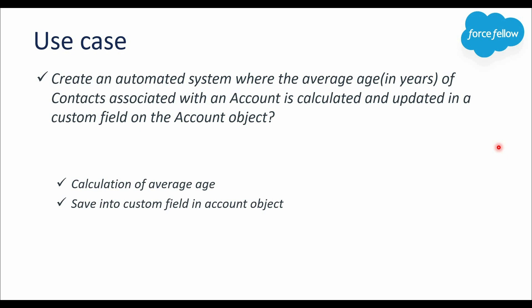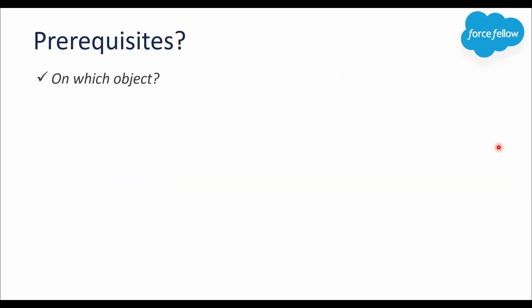However, here we have a Lookup relationship between Account and Contact, so we can't use the Roll-Up Summary feature. In this case we need to write custom logic, either using automation tools like Record-Triggered Flows or using Apex Triggers. In this video we will achieve this requirement using Apex Triggers. When creating Apex triggers, the first thing we need to know is on which object we should create the trigger — identifying the right object is very important.